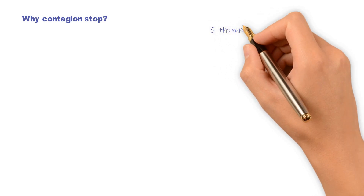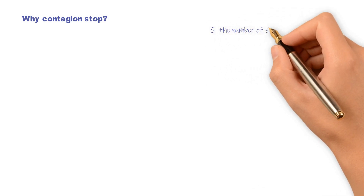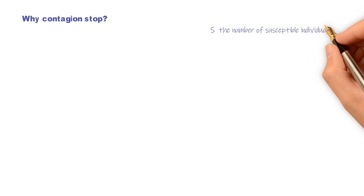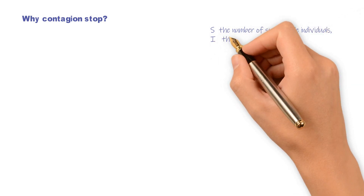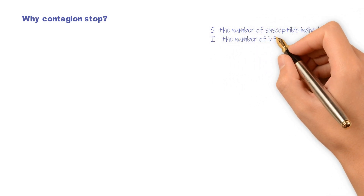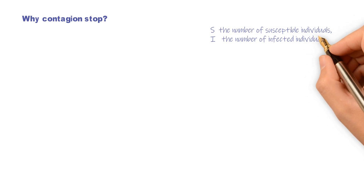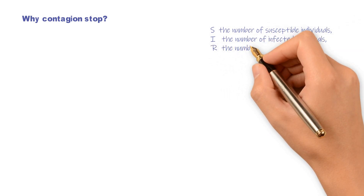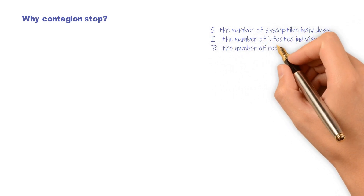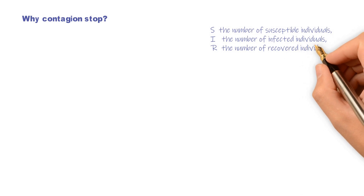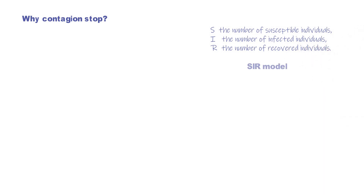There is S, which is the number of susceptible individuals; I, which is the number of infected individuals; and R, which is the number of recovered individuals. This is the famous SIR model.